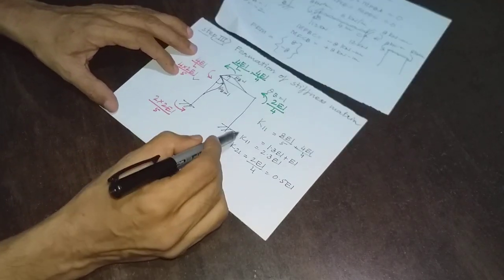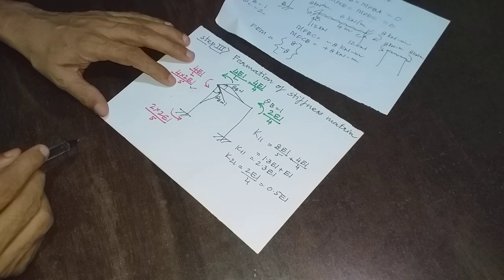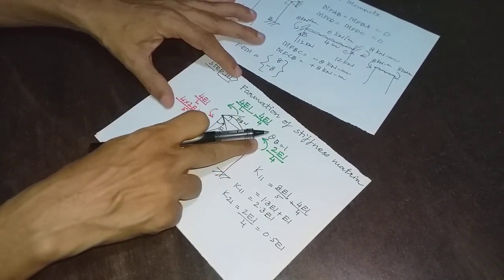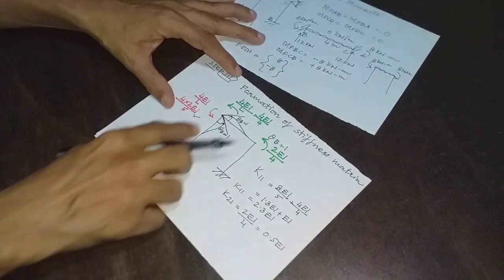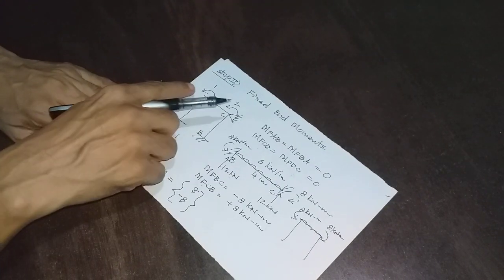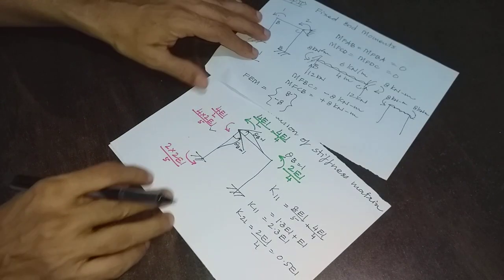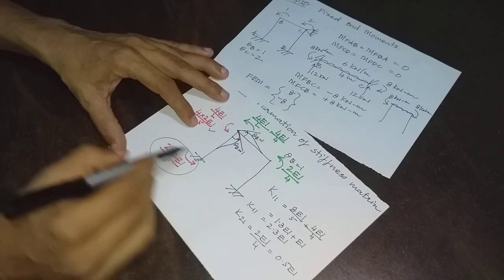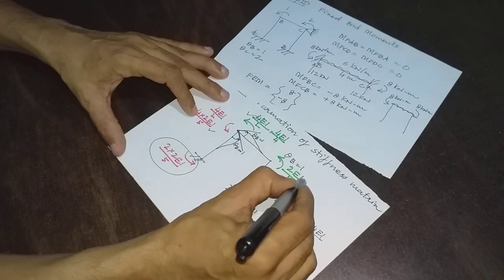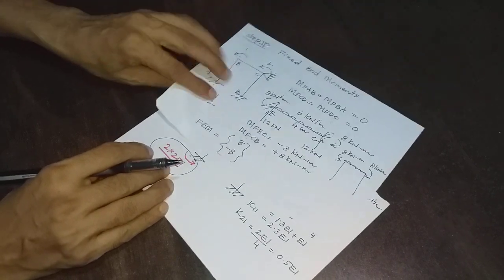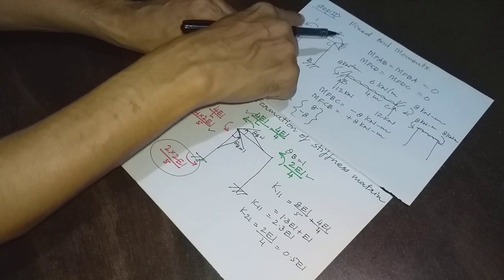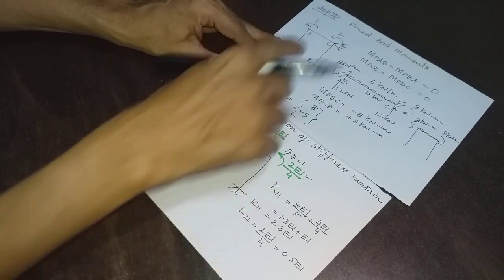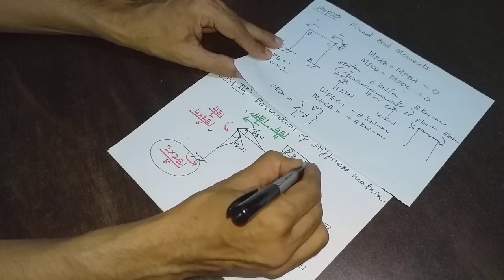This is how the first column of the stiffness matrix is generated directly by the direct stiffness method using rotational stiffnesses. Note that this is an incomplete diagram — translational forces are not shown because the only coordinates are rotational ones. The moments at B correspond to coordinate 1 and the moment at C corresponds to coordinate 2.